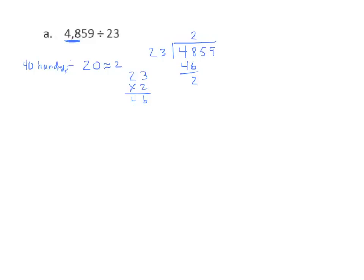Now we need to continue. I cannot work with 2 hundreds and 23, so I'm going to decompose that, and I'm going to call it 25 tens. We have 20 for our divisor, and 25 tens is really close to 20 tens. So I'm going to get 1 ten in the quotient. I'm going to multiply 1 times 23, and I get 23 tens.